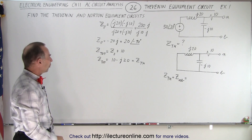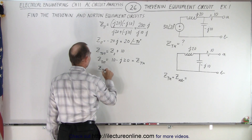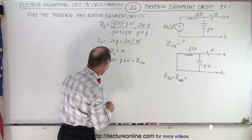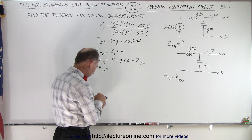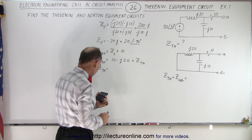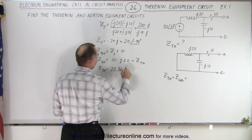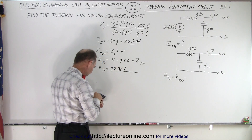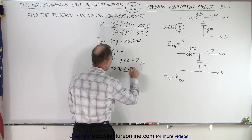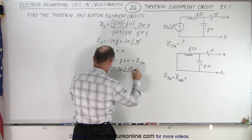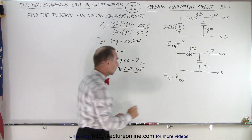Let's also express Z_Thevenin in magnitude-phase angle format. The magnitude is the square root of (10² + 20²) = square root of 500, which is 22.36. The phase angle is the inverse tangent of -20/10, which gives -63.435 degrees. So Z_Thevenin = 22.36 at -63.435 degrees.